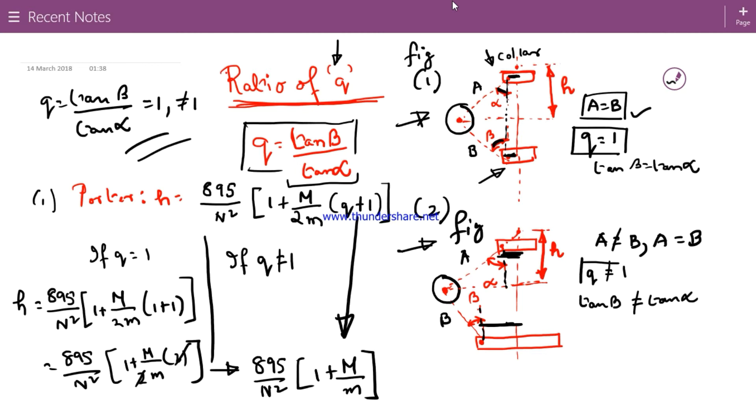If this offset distance is different, even if A equal to B or A not equal to B, then we can say Q will not be equal to 1, means tan beta not equal to tan alpha. So we have certain value of Q then, it will be certainly not Q equal to 1. So we have two things, either it will be Q equal to 1 or it will be somewhat other than 1.